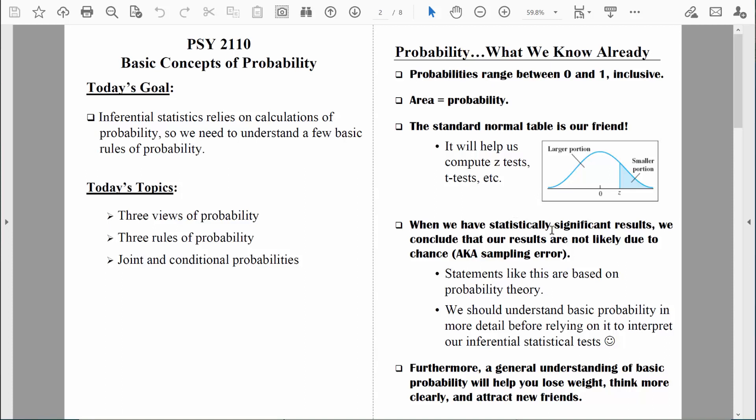We've also talked just a little bit about what it means to have statistically significant results. And in general, what it basically means is that we have effectively ruled out sampling error as an explanation for our results. In other words, the results that we have are not likely due to chance. Well, keep this in mind. Every time I say that word likely, I'm talking about likelihood, which is really just another term for probability. So because inferential statistics is so intertwined with probability, we just need to make sure we understand it from several different angles. And as I mentioned at the bottom of that page, a good general understanding of probability will help you lose weight, think more clearly, and attract new friends. Those things, of course, are true.